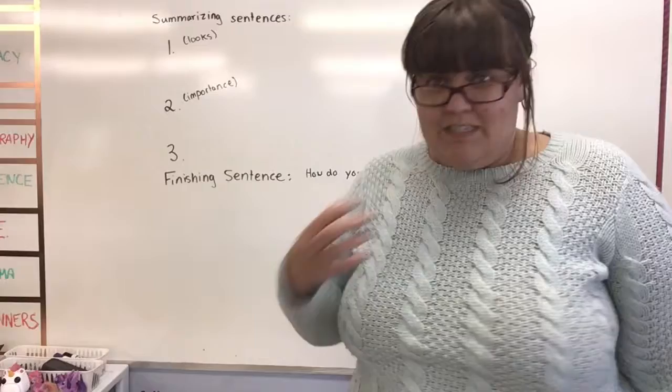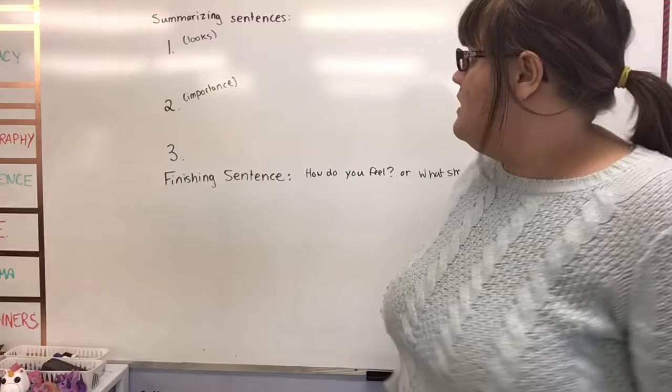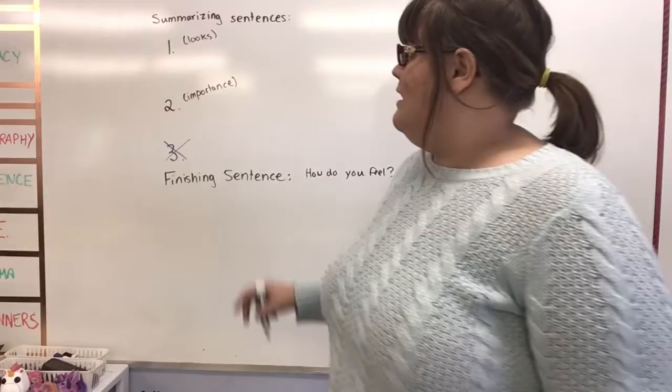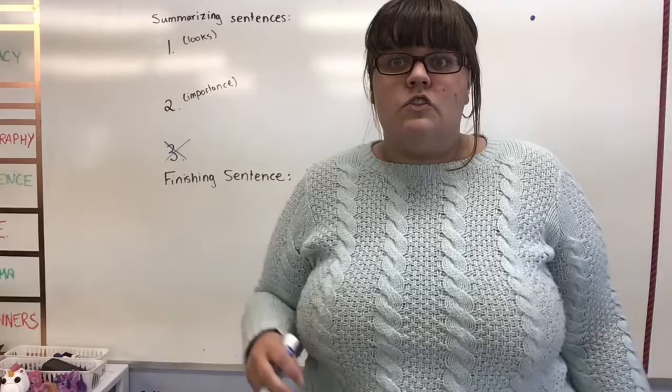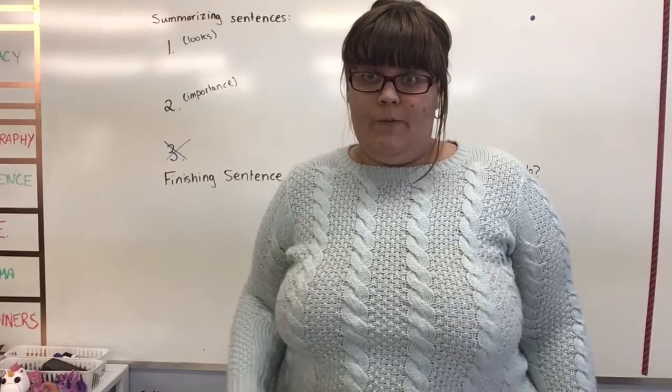Now, grade fours, we've only done two paragraphs, so you can just put an X through that last one, and we're just going to focus on two sentences. The first one should summarize our paragraph about how our place looks. The second sentence should summarize something about why the place is important. You can use facts from your paragraph again, but you should not use the exact sentences from other paragraphs, so just be careful.